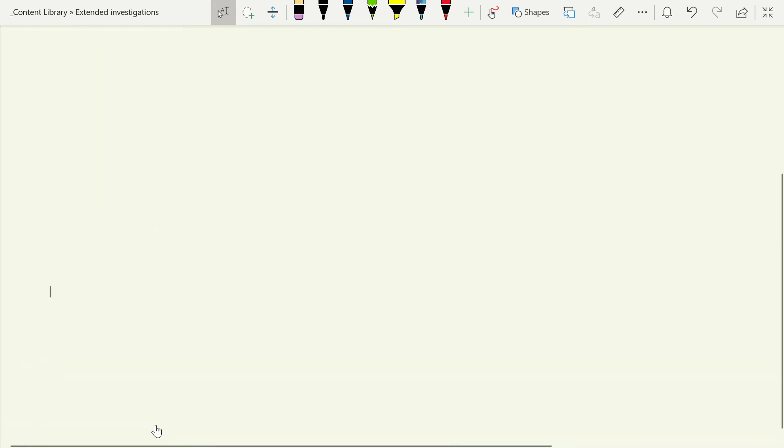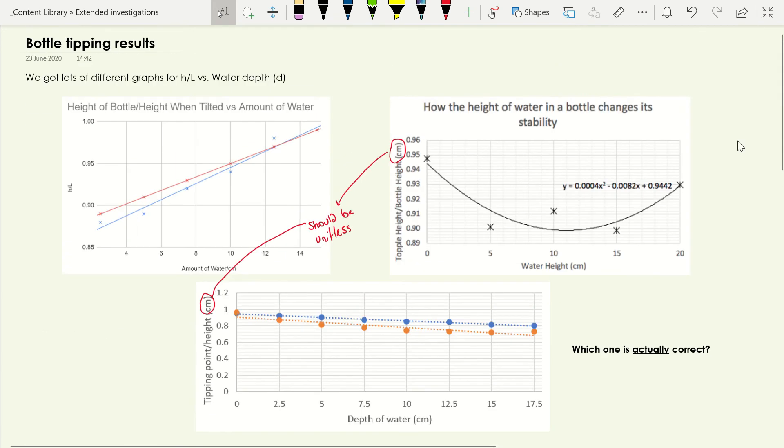Let's have a look at the results that we got as a class. When we did this, people got lots of different graphs. People got genuinely different results when they did this experiment. We got graphs where we just had a straight line with a positive gradient, some people got this kind of u-shape graph so it went down and then came back up, and some people just got a graph where it went down the whole time. The question is which one of these is actually correct?